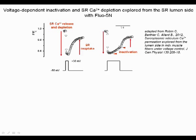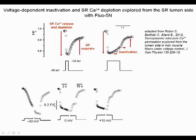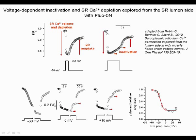Depletion can thus be easily distinguished from inactivation because the former leads to a decrease of the SR calcium signal, whereas the latter leads to the opposite. Applying voltage pulses of increasing amplitude shows that for low voltage pulses, here to minus 30 mV, only SR calcium depletion occurred, while for higher pulses inactivation developed and reinforced as depolarization went higher. Plotting the magnitude of inactivation as a function of voltage indicated half-maximal inactivation at minus 30 mV on average.